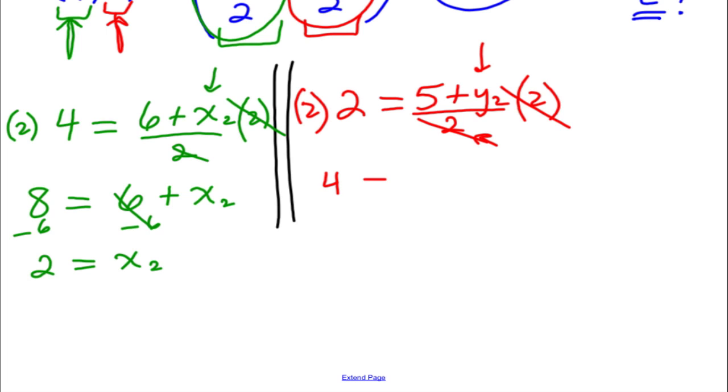So 4 equals 5 plus Y2. And now again, we're trying to isolate the Y2. Since 5 is adding, we're going to subtract 5 from both sides. So we get negative 1 equals Y2.